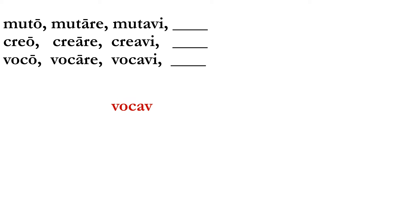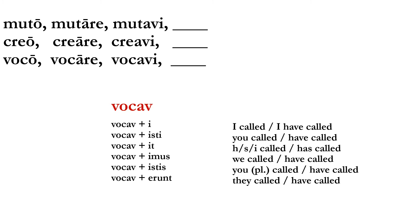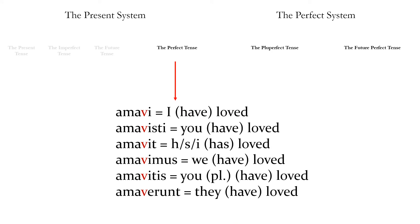We take the third principal part and use it to build with. Here is this new set of endings: 'vocavi, vocavisti, vocavit, vocavimus, vocavistis, vocaverunt.' Some of these are easy to identify because they look like other forms we've used. 'Vocavi' means I called or I have called — in English those would be two completely different things, but it doesn't matter in Latin. That's what the perfect tense looks like for a regular verb: 'amavi, amavisti, amavit, amavimus, amavistis, amaverunt.'